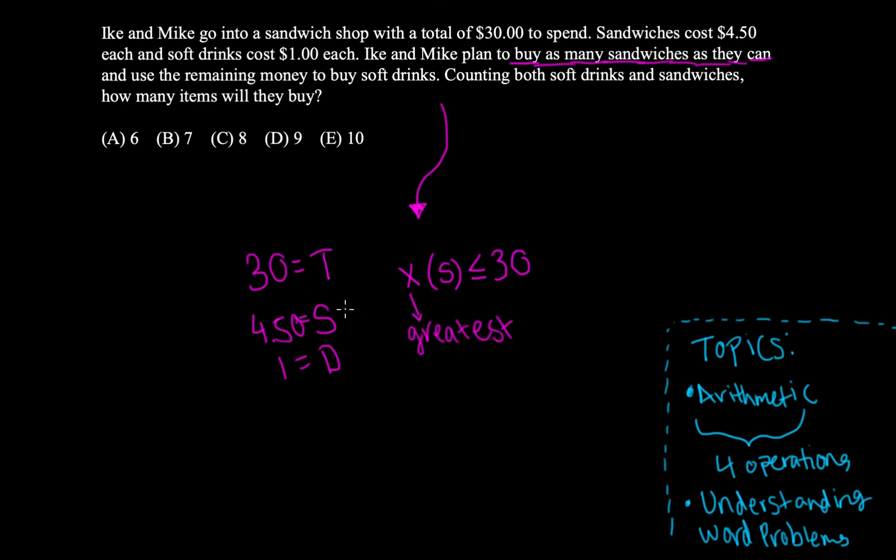All right, so the way I would do this is I don't like dealing with decimals personally, especially in a competition where I'm racing against the clock. I don't want to work with decimals. So what I would do is I would go ahead and say 4.50 is equal to 9 over 2.